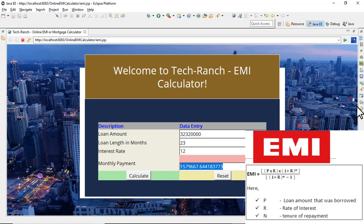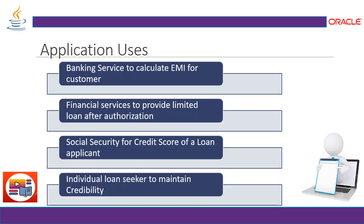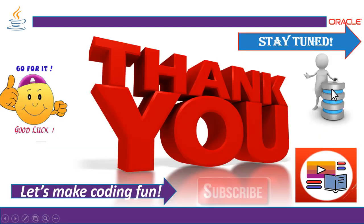Now let's look at the usage of these types of applications. When we apply for a loan, the banking service calculates the EMI for the loan applicant. This is most useful in banking and financial services to provide loans after authorization — calculating how much the EMI will be and how much the applicant can afford. It is also used in social security for credit score calculation to assess the credibility of a loan applicant.